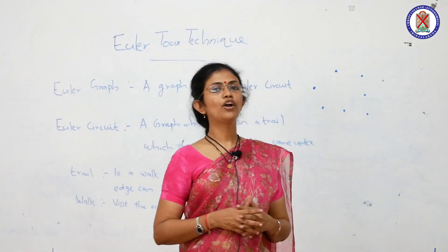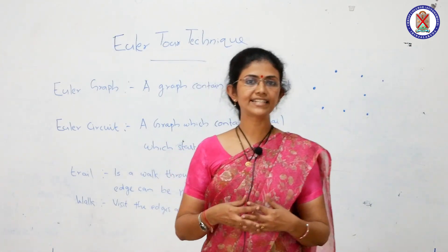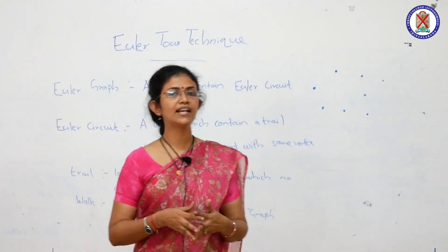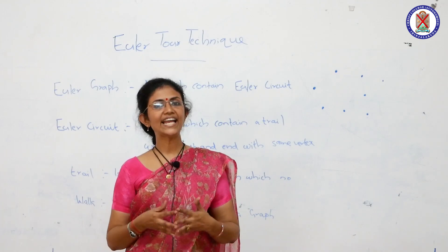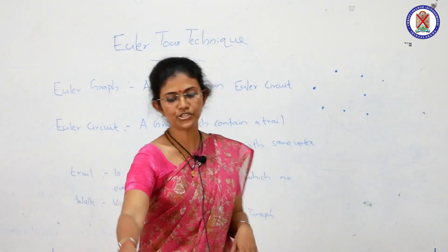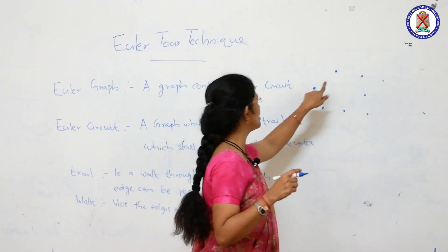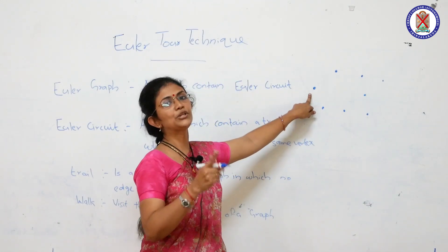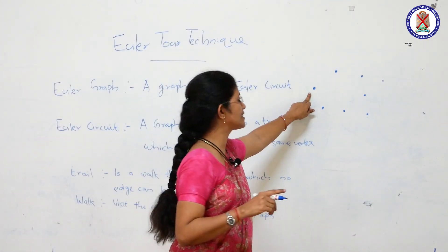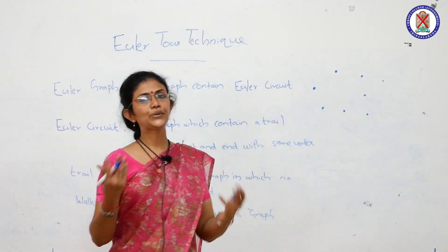Now we will discuss Euler techniques. An Euler graph is a graph which contains an Euler circuit. An Euler circuit is a closed path that starts and ends at the same vertex in the graph.